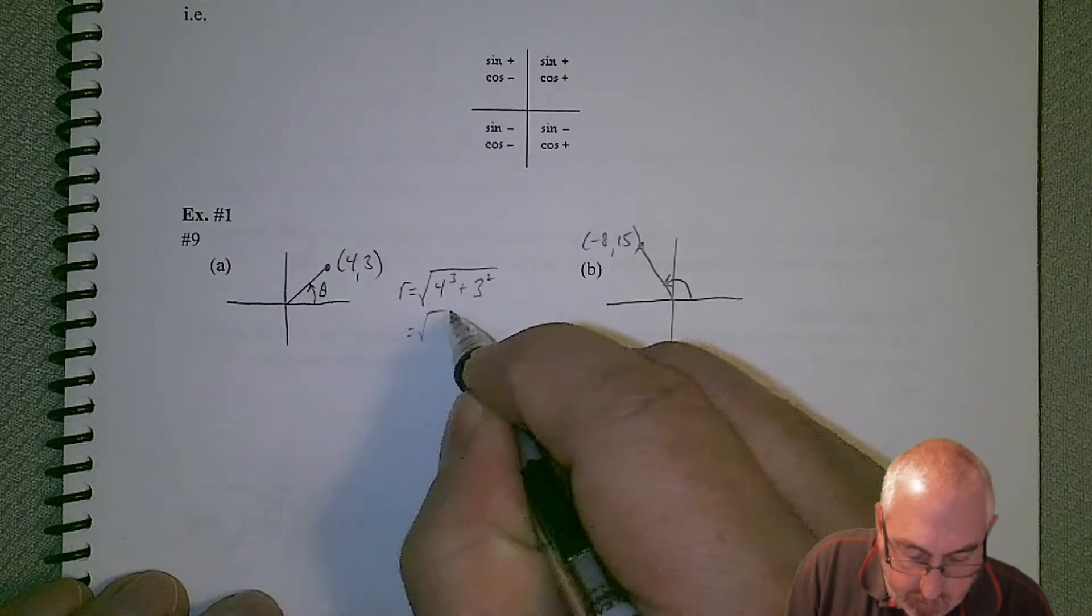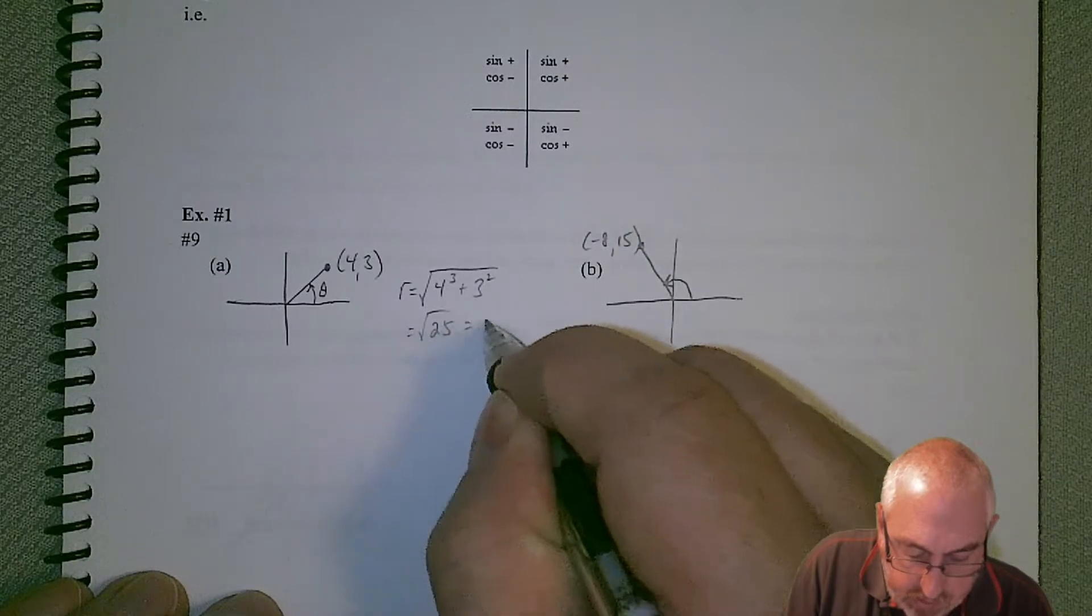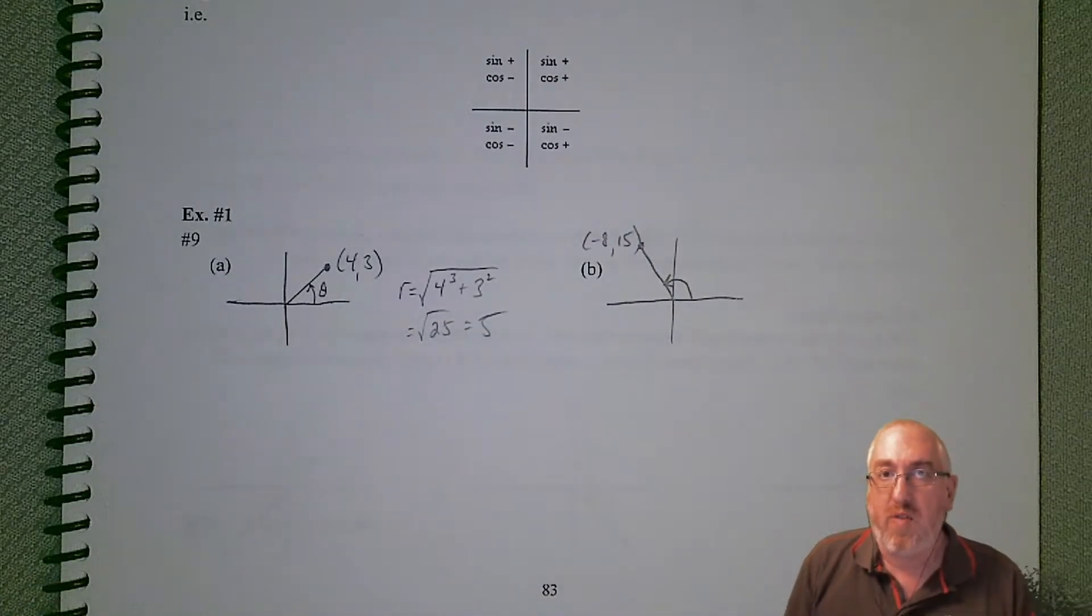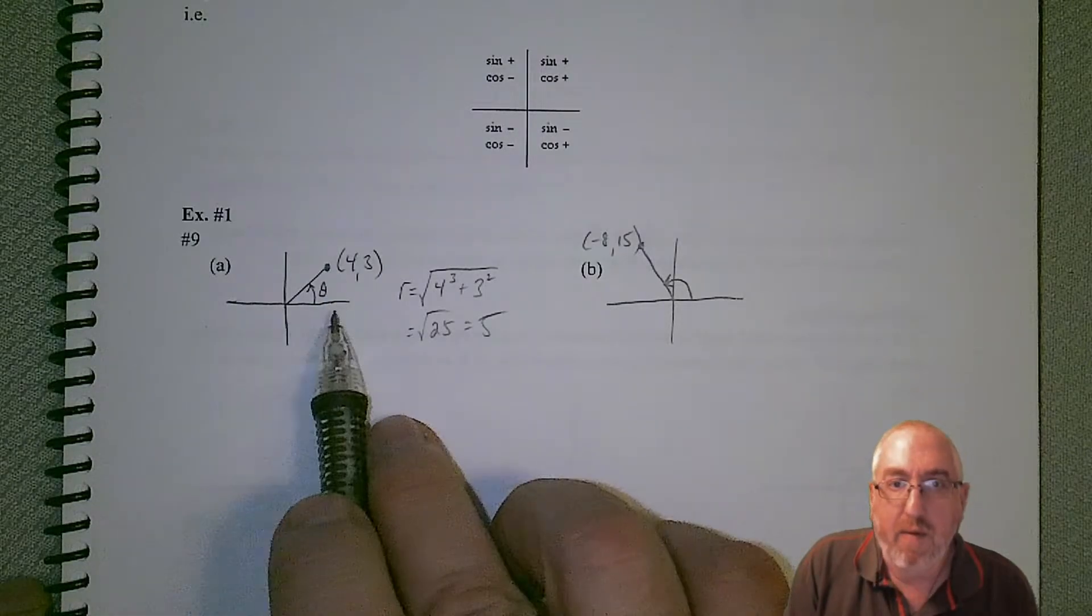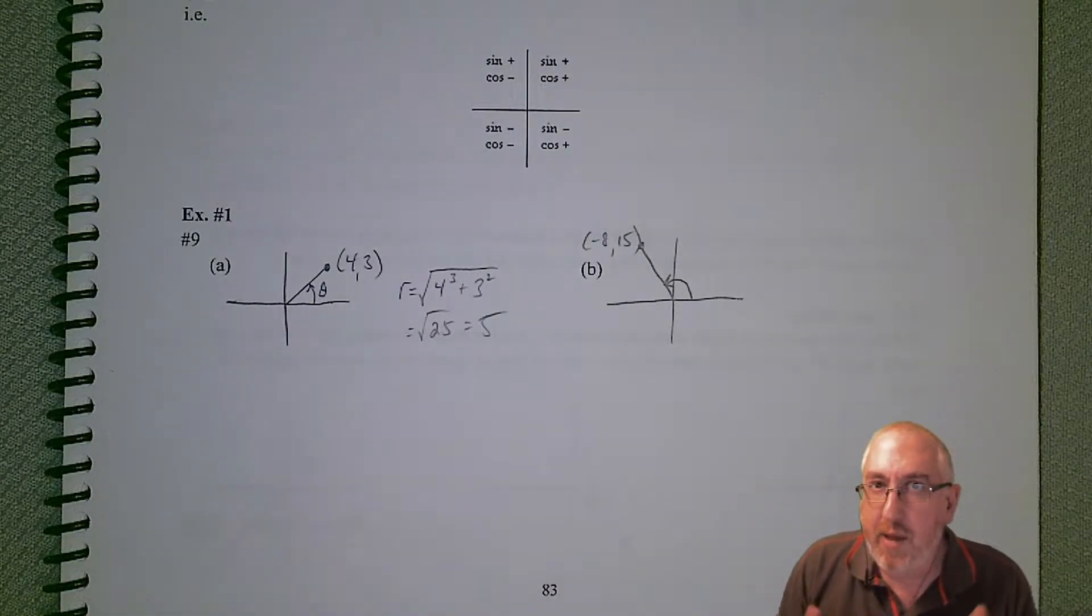that's going to give us the square root of 25, which is 5. So r is 5. We can kind of see that it's just going to be a 3, 4, 5 triangle, one of our nice Pythagorean triples.